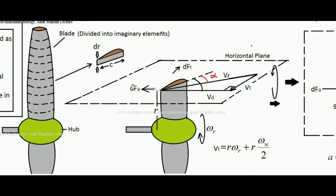This rotor is spinning in the clockwise direction when viewed from right to left, so this blade is moving inside the screen with some tangential velocity. At a distance r, and with angular velocity ω_r, the tangential velocity of the blade at that point is r·ω_r. The actual velocity vector striking this aerofoil segment is the relative velocity V_r. Since the wind turbine is spinning, the wind has a relative tangential component, so the relative velocity is V_r = V_t + V_d, where V_t is the tangential component and V_d is the axial wind velocity.